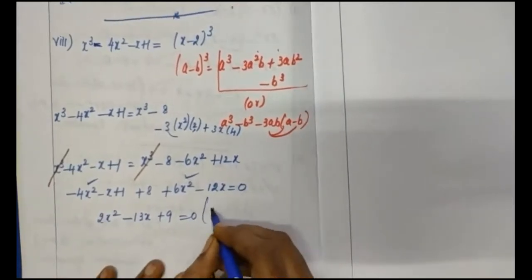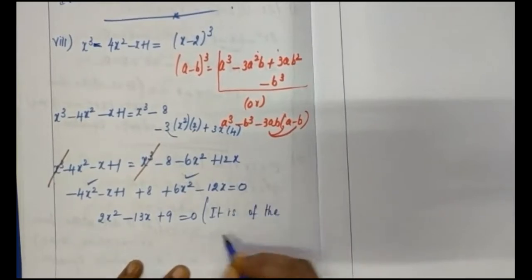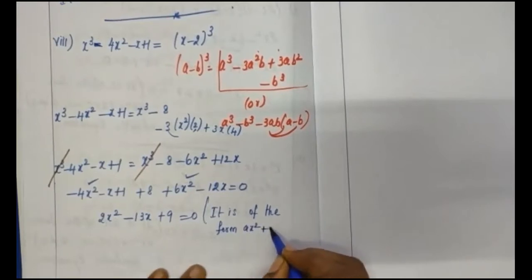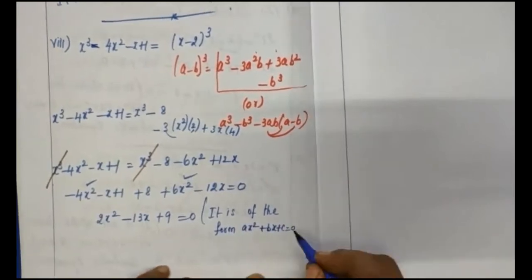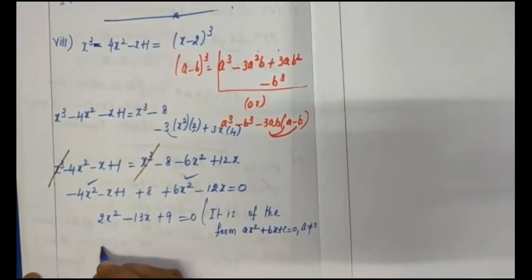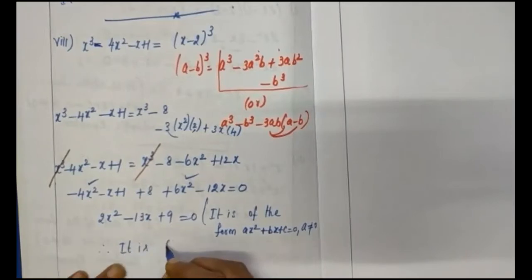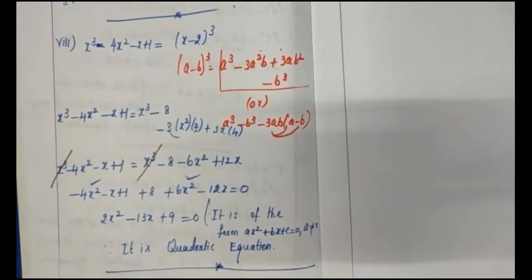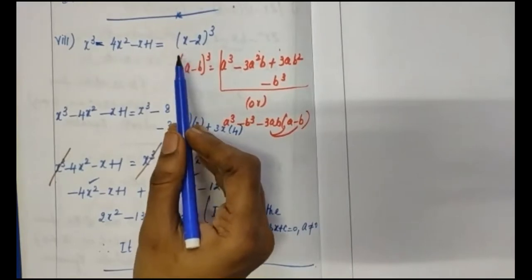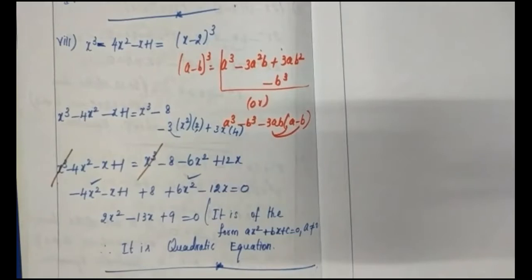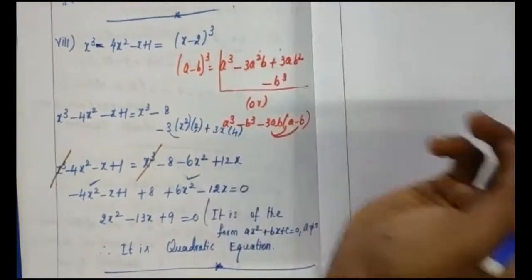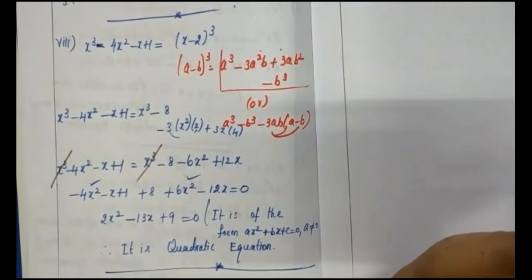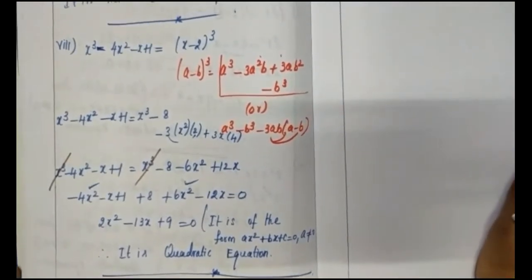So to summarize: the final line must always be in the format ax squared plus bx plus c equals 0, where a is not equal to 0 — that is the quadratic equation format. Question number 1 with all its divisions is now complete.